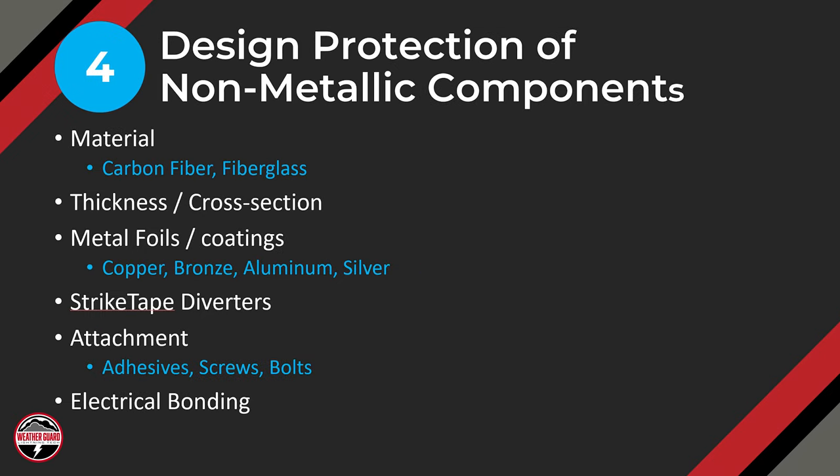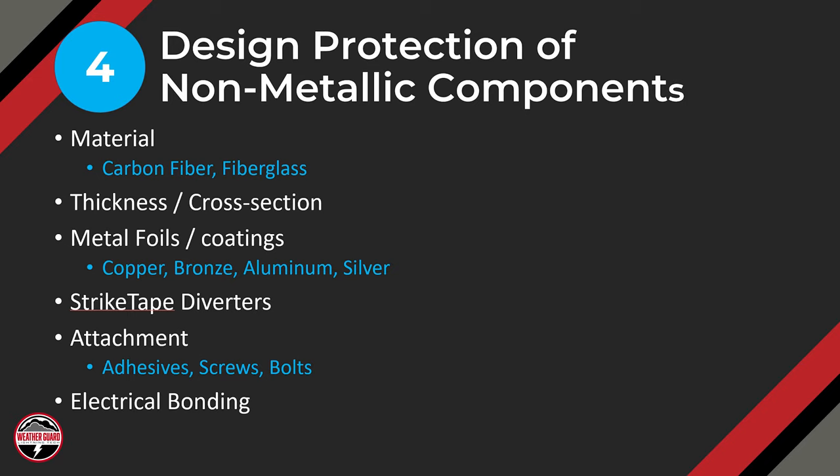When designing protection for non-metallic components like fiberglass, Kevlar, or carbon fiber, we need to look at specifically what those materials are. A carbon fiber structure will have slightly different types of protection than fiberglass. We'll look at the thickness and cross section, and consider metal foils and conductive coatings. Typical materials include copper, bronze, aluminum in terms of expanded metal foils, and silver, which is a very common conductive sprayed material applied to fiberglass and carbon fiber.